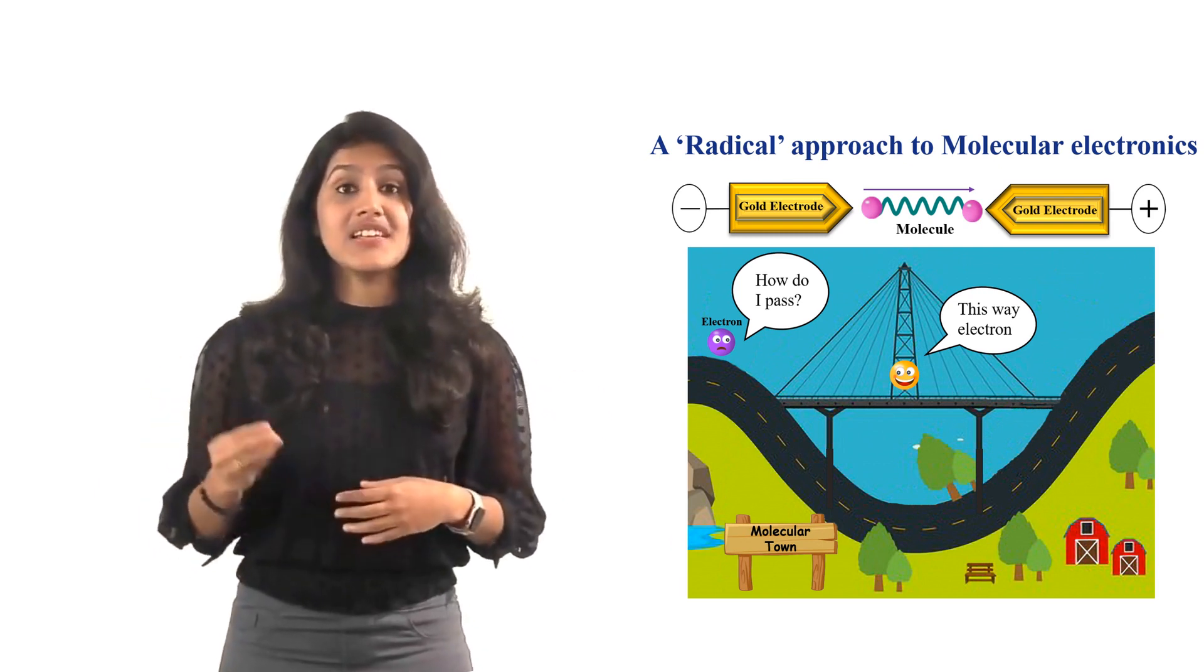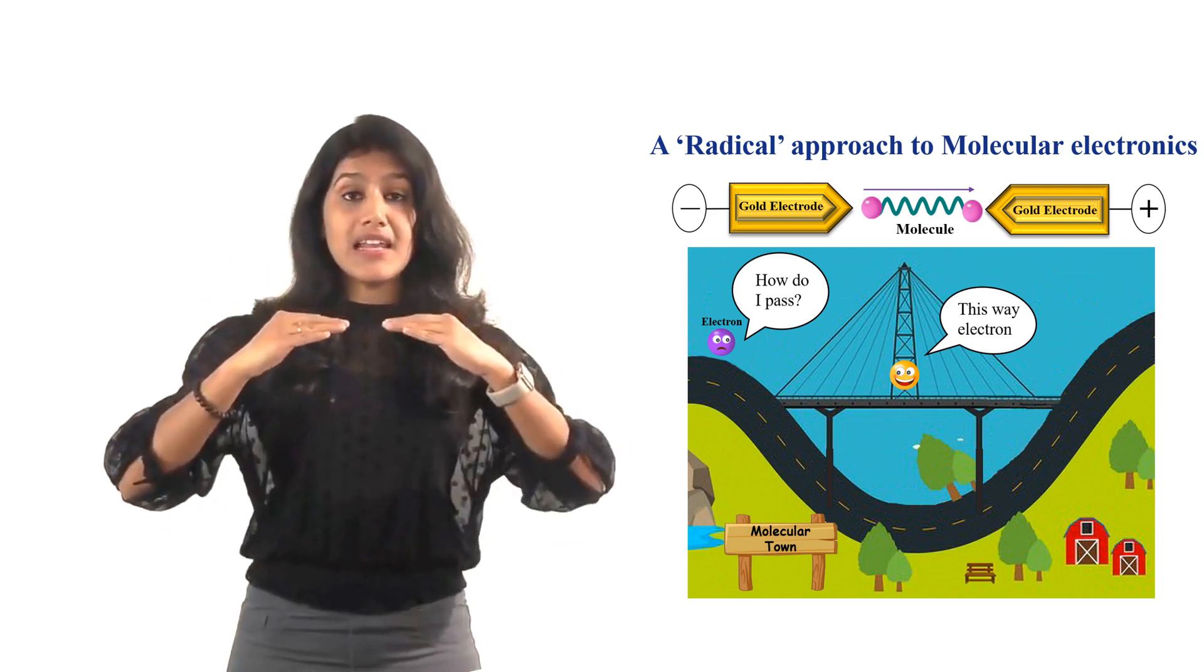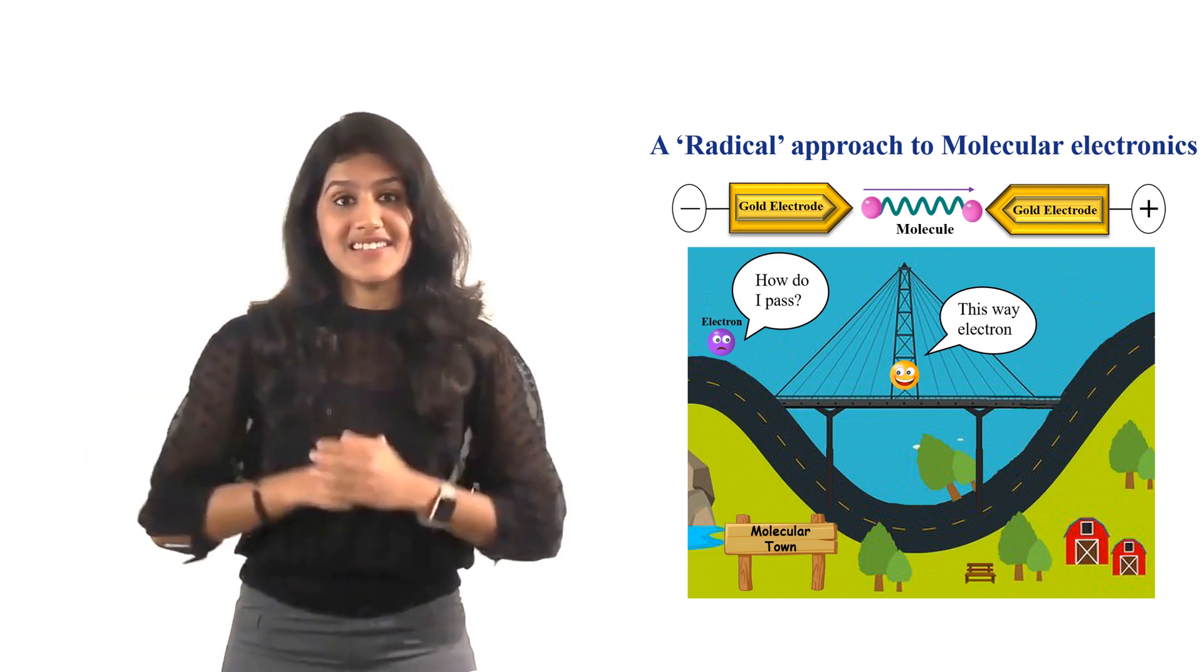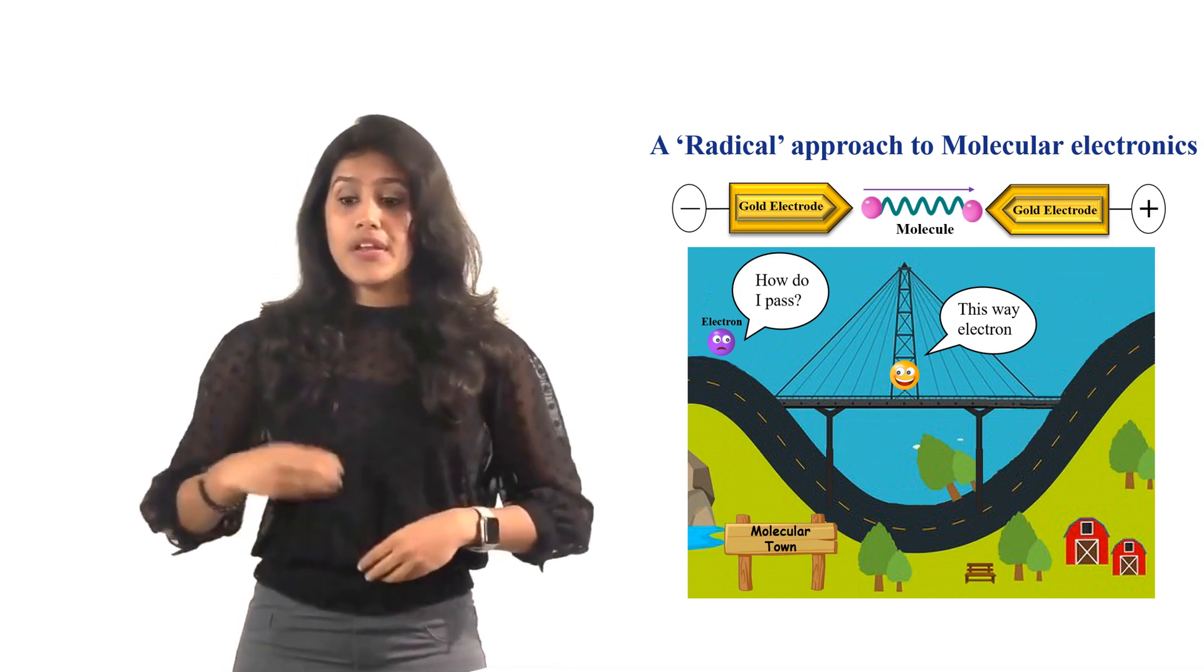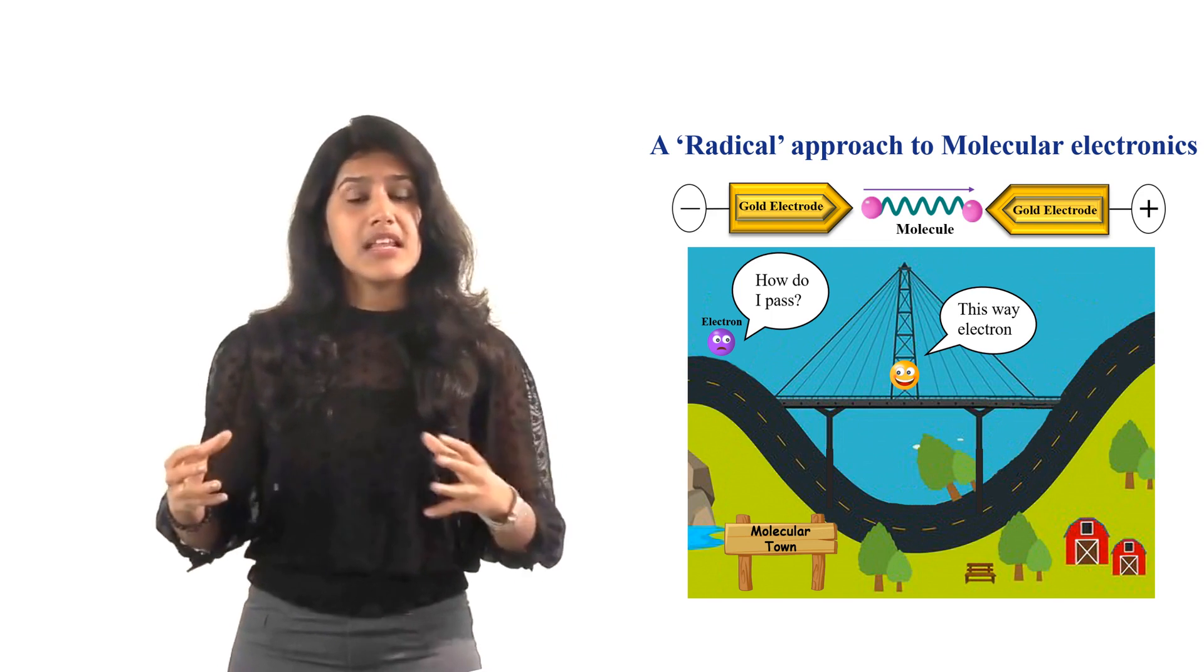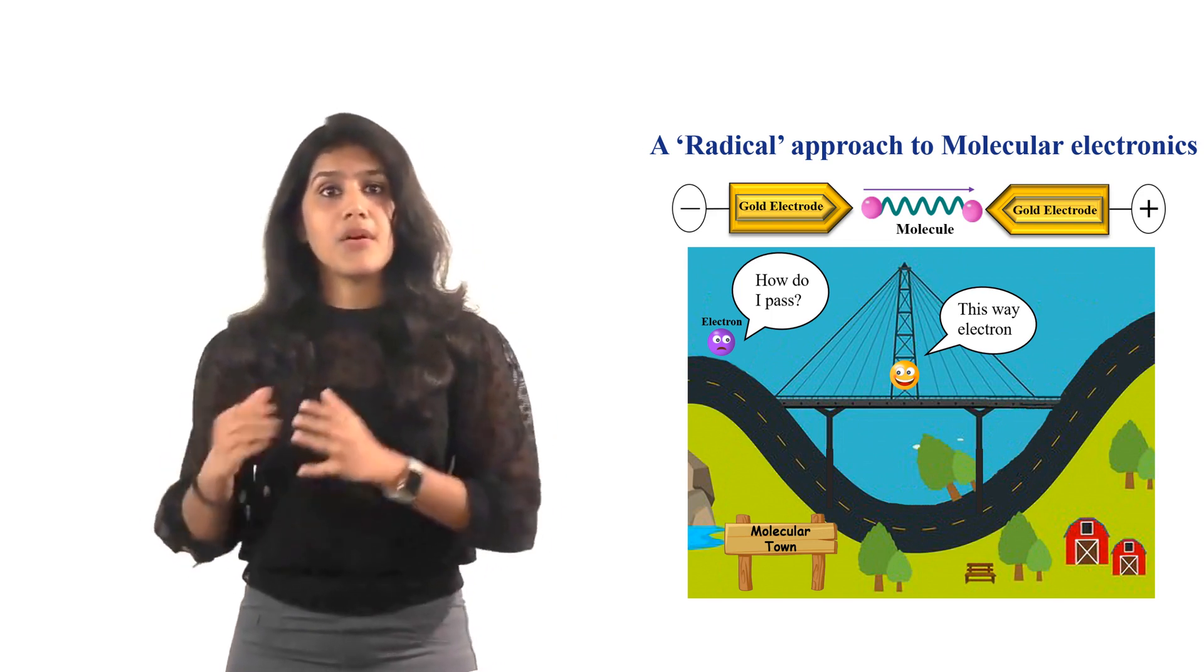This additional electron occupies a level higher up aligning the bridge enhancing conductance. But most of these radicals are unstable. Whenever they find a perfect partner the electrons pair up and they become normal molecule again.